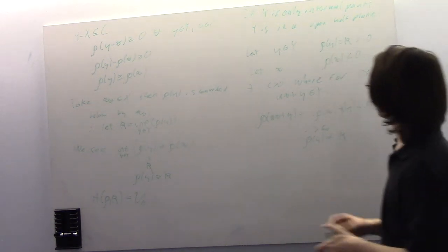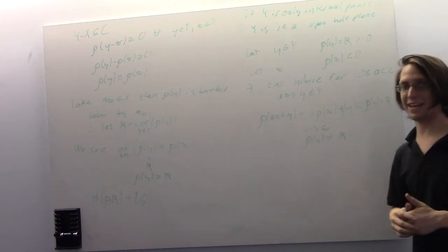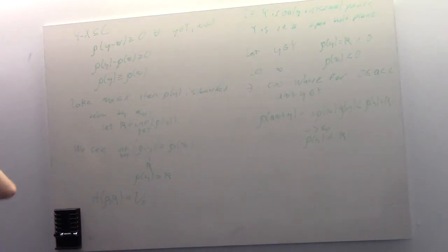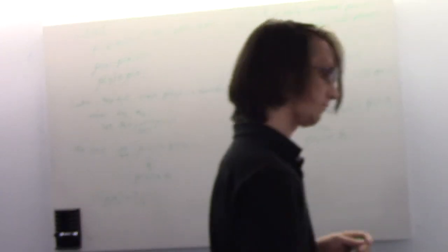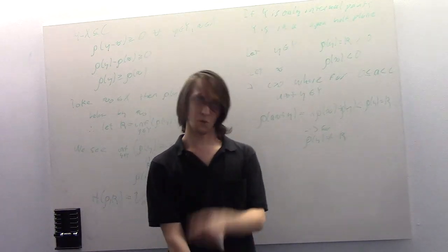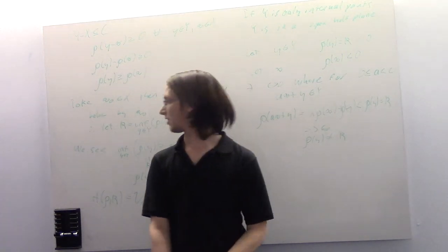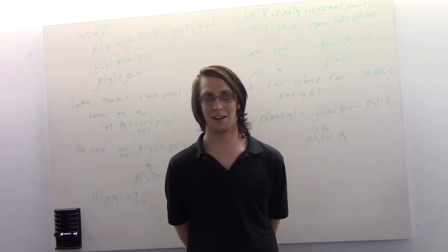If X is also only internal points, that means rho(X) is also always strictly less than K, meaning X is in the other open half-plane. So H strictly separates X and Y.